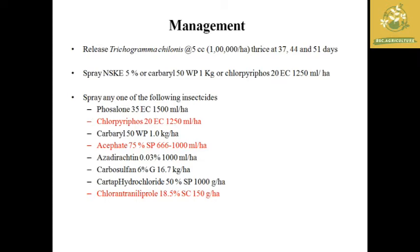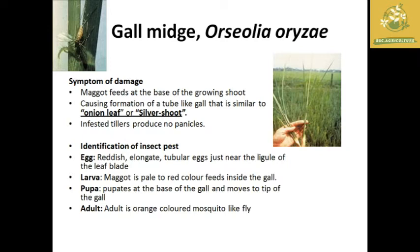The next pest is gall midge, with scientific name Orseolia oryzae. Symptoms of damage: the larvae feed at the base of the growing shoot and cause formation of galls similar to an onion leaf or silver shoot in rice. The infested tillers do not produce panicles, causing economic loss. For identification, eggs are reddish, elongated, and tubular, found near the edge of the leaf blade.